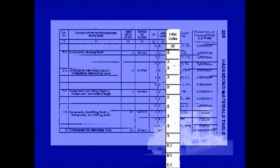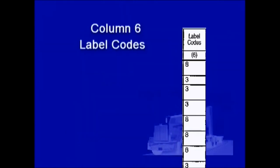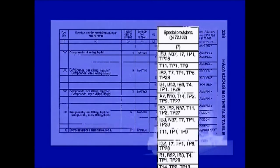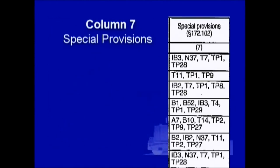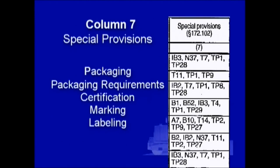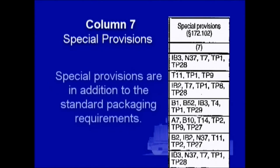Column six of the HMT specifies the hazard warning labels required to be applied to each package of hazardous material unless excepted. Column seven specifies codes for special provisions applicable to packaging, packaging requirements, certification, marking, or labeling for hazardous materials. These special provisions are in addition to the standard packaging requirements. Packages must conform to the special provision limitations or additional regulations. Special provisions are coded with numbers and/or letters.